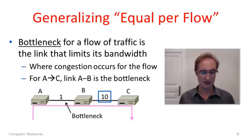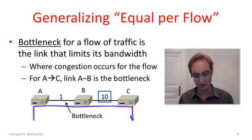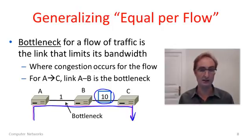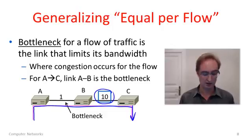So equal per flow it is. I'd now like to tell you what equal per flow means in a more complicated network setting. Let's start out with terminology. The bottleneck for a flow of traffic is the link which is limiting the bandwidth. For instance, if I have that flow going from A to C through this network, it's going across two different links. I've changed the capacity of one of the links so that it's 10 units. The former link between A and B is still slow at one unit of capacity. For this flow, A-B is the bottleneck link. It's the place that's limiting the amount of capacity we can assign to this flow, and it's also the place where congestion is going to occur.